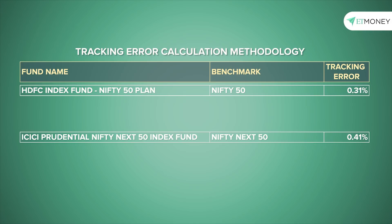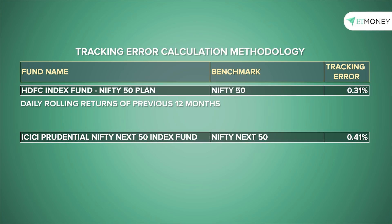More importantly, we noticed that the methodology for calculating the tracking error was very different for different AMCs. Like in the case of HDFC's Nifty 50 index fund, the tracking error is calculated on the basis of the daily rolling returns for the previous 12 months. However, ICICI Prudential's Nifty index fund computes tracking error in a completely different way by taking three years of data instead of one year as in the case of HDFC. Secondly, the ICICI index fund uses the month-end NAV while HDFC uses the daily rolling returns.